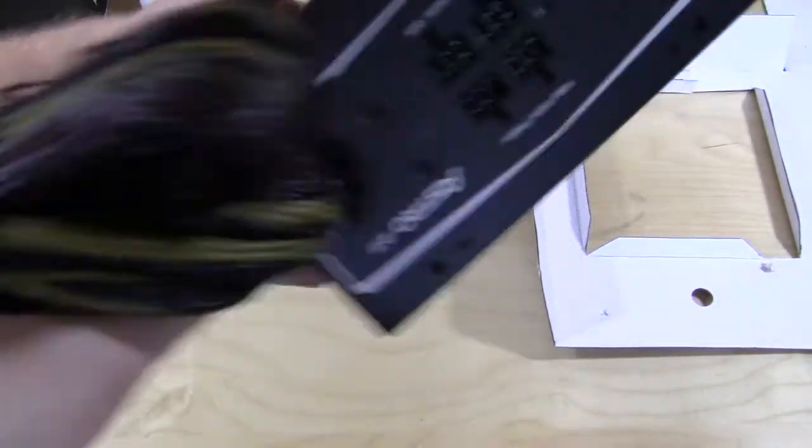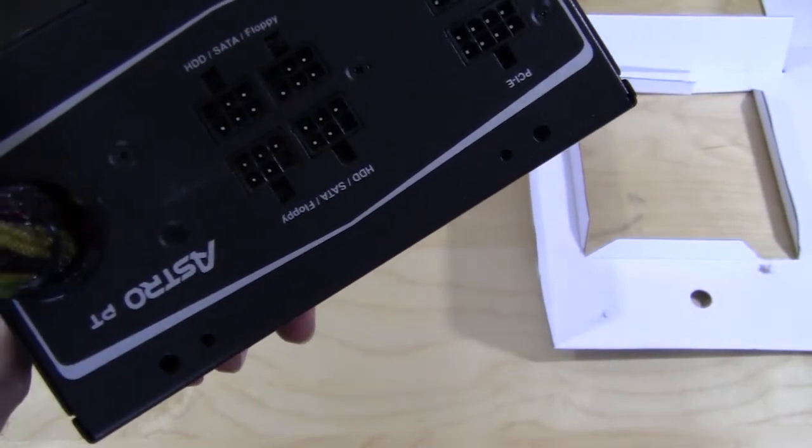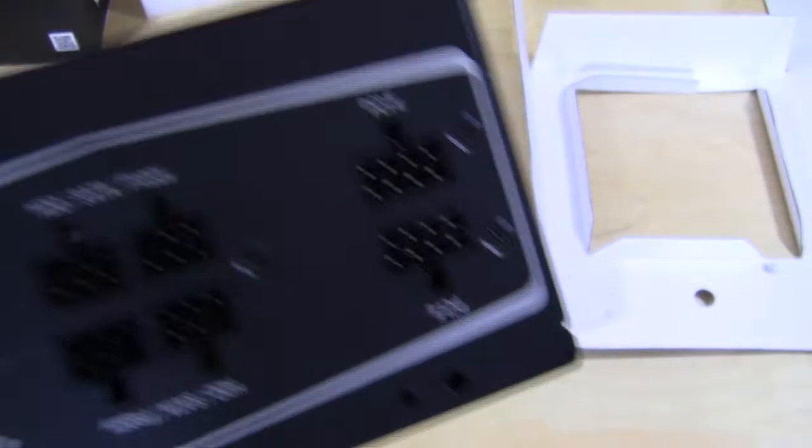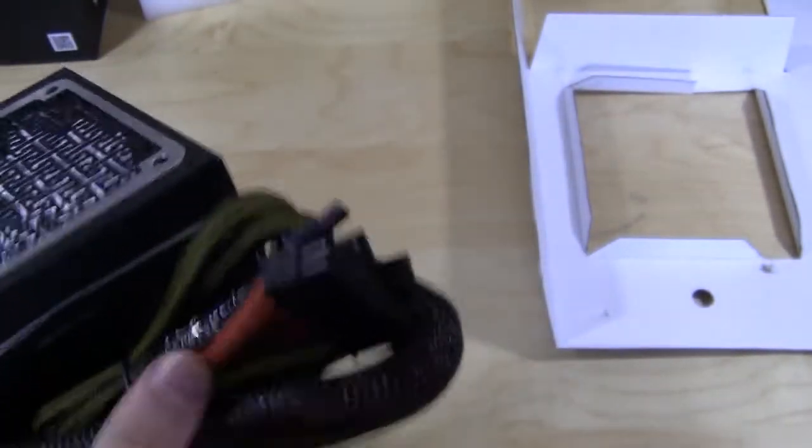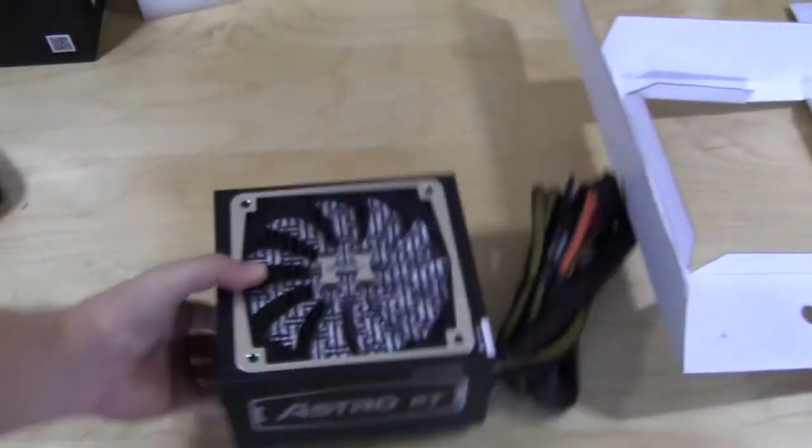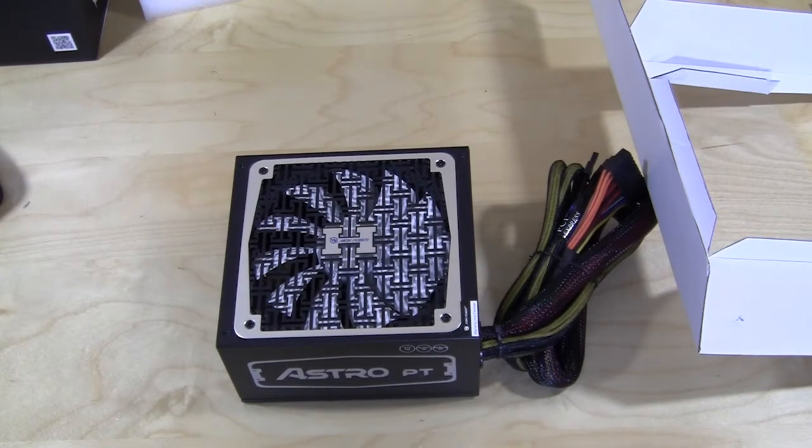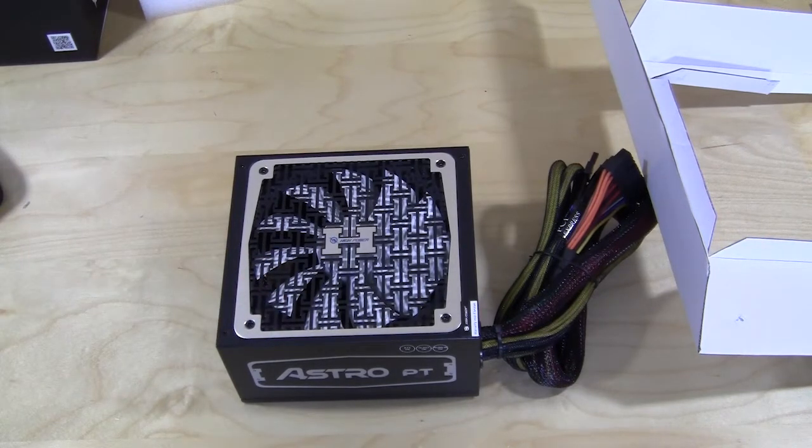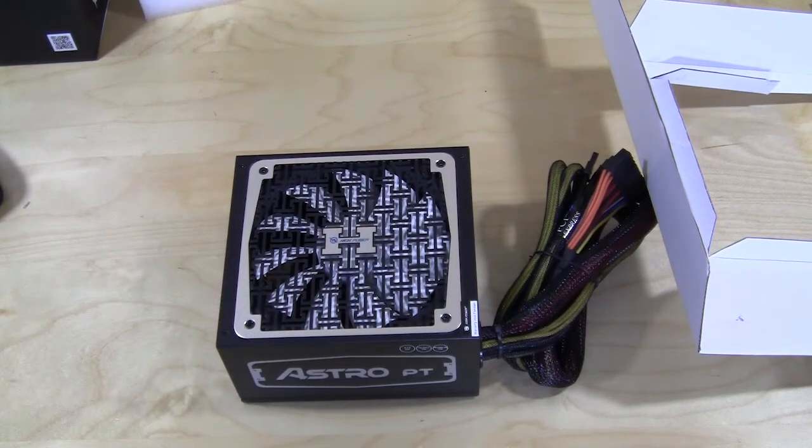And then for your connectors right here - whichever way we want to do this - if I can get it over so you guys can see. We have for your hard drive SATA and floppy, four connectors there. And then for your PCI Express, we have two connectors right there. So very cool. I can't wait to really check this out. This has a lot of features that I haven't really seen in power supplies. This is a new company to us. So again, this is the High Power Astro PT 700 watt power supply. Check back very soon on Think Computers for the full review. And remember, if you like our unboxing videos, why don't you subscribe. Catch you guys later.